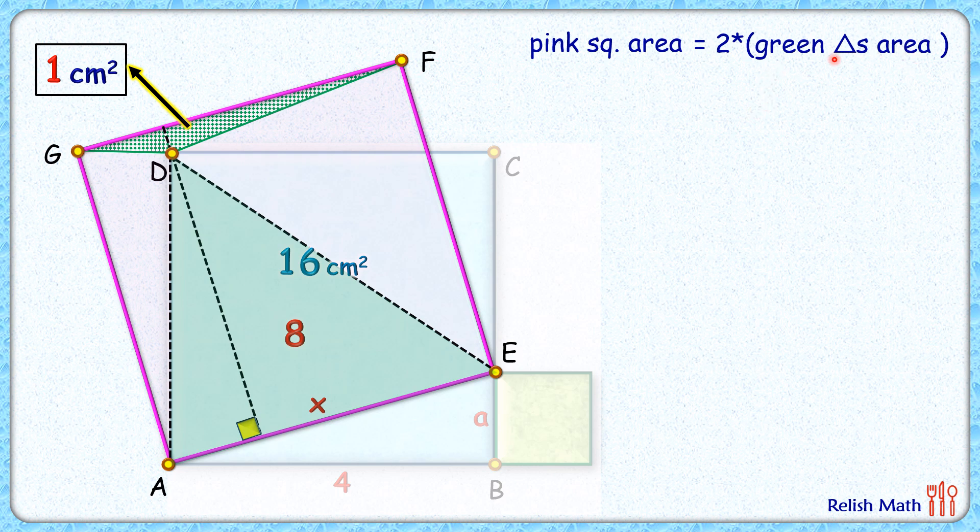Now this green triangle is 1 cm² given and this one is 8 cm² we have calculated. So we can say pink square area is 2 times of 1 plus 8 or 18 cm². So x is the side length of pink square, so we can say x² is 18 cm².